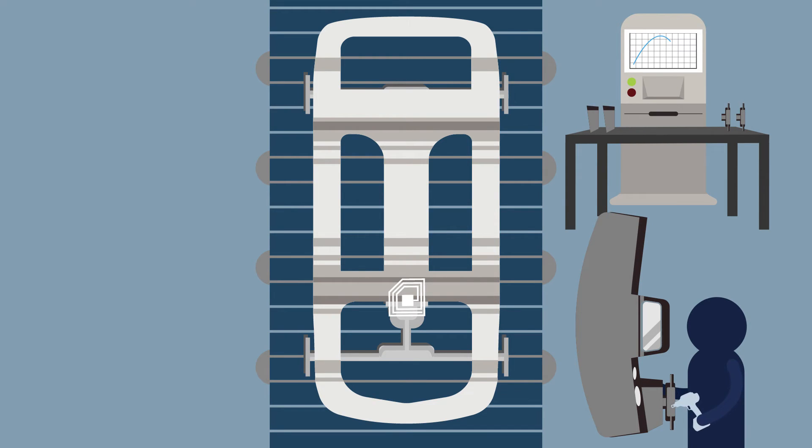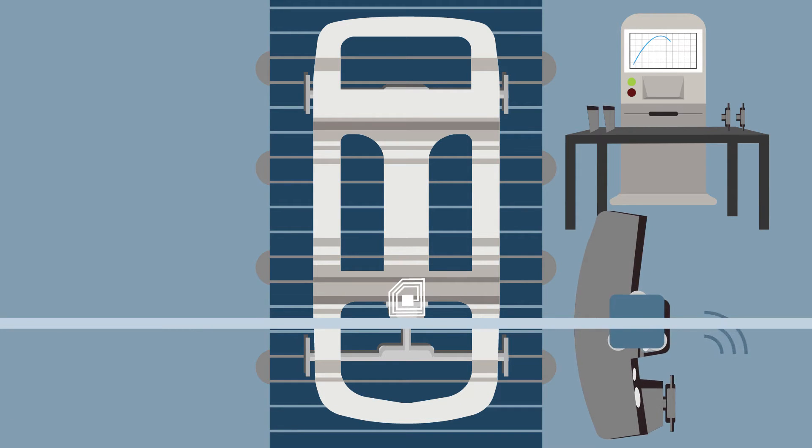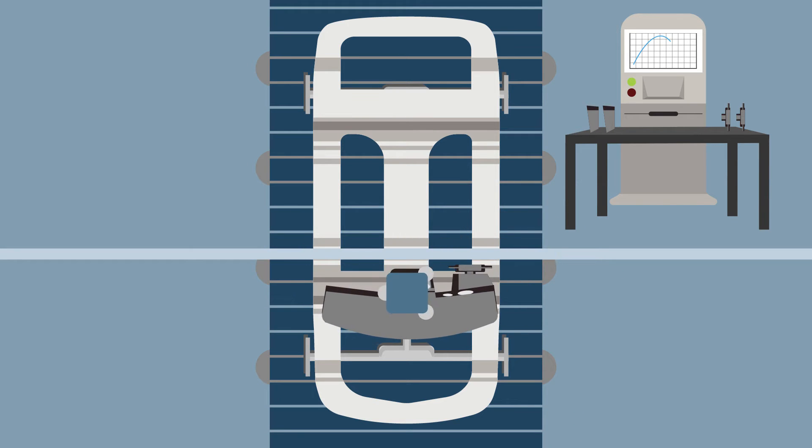Even handheld assembly tools have smart technology to connect man and machine better. The Nexo Nutrunner Tightening System has links to all relevant data. The Nexo determines the exact positioning of the screw automatically, making a wrong assembly impossible.